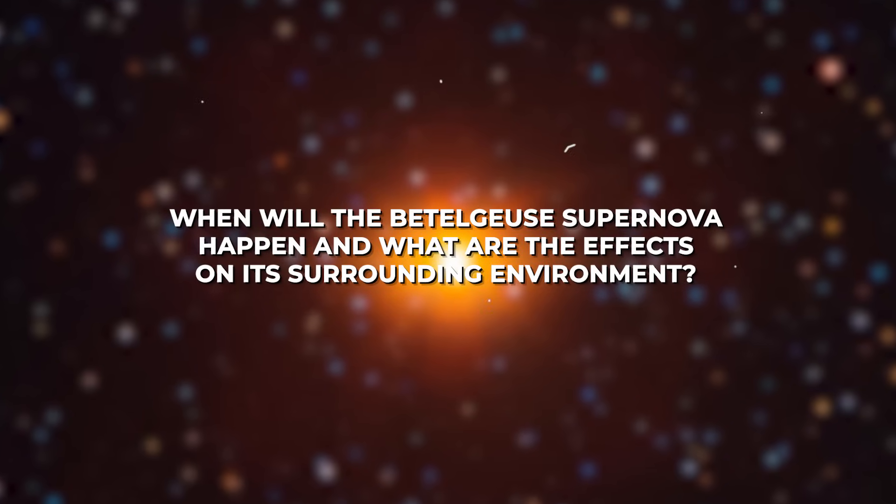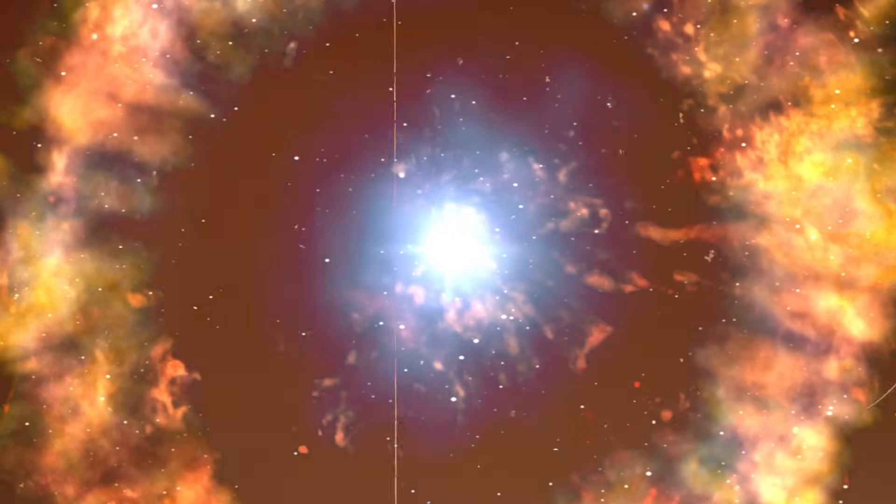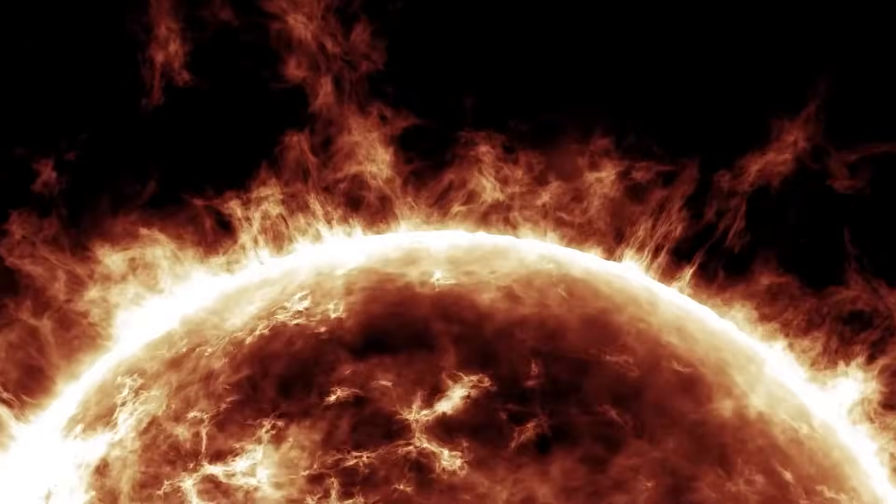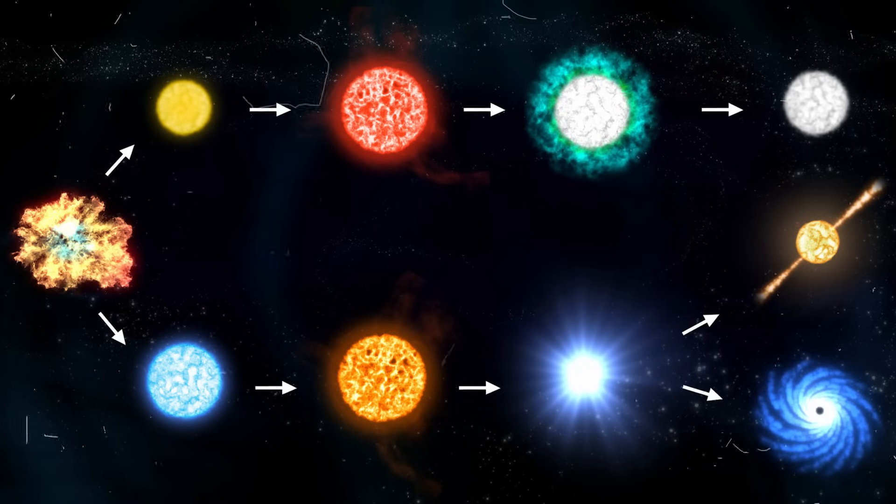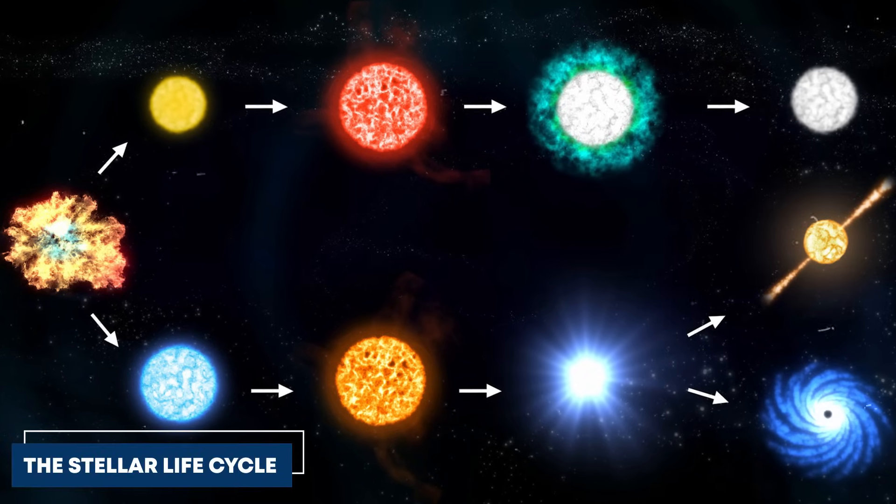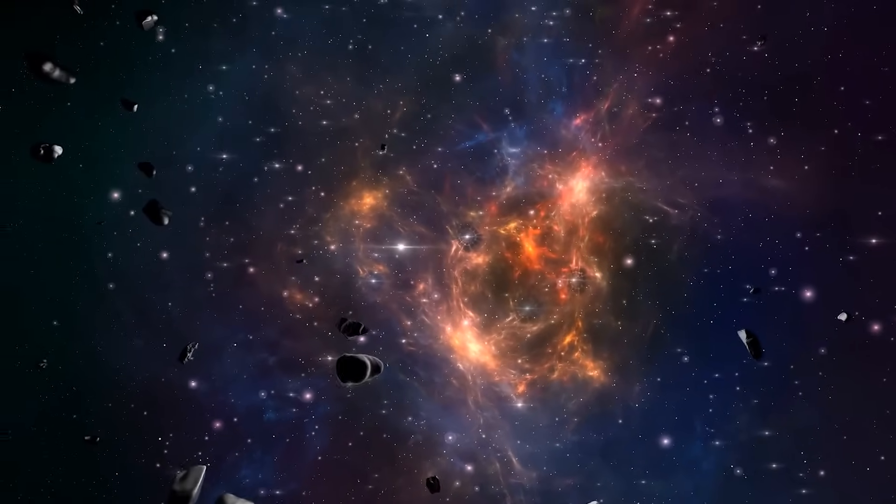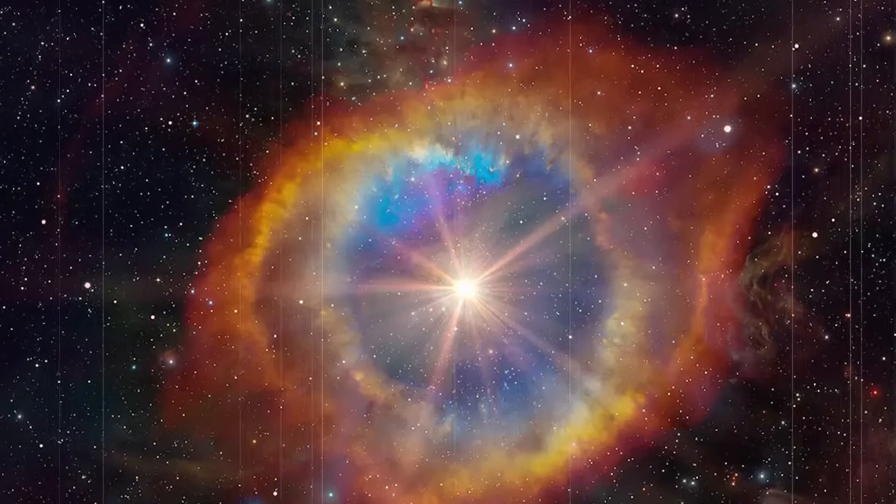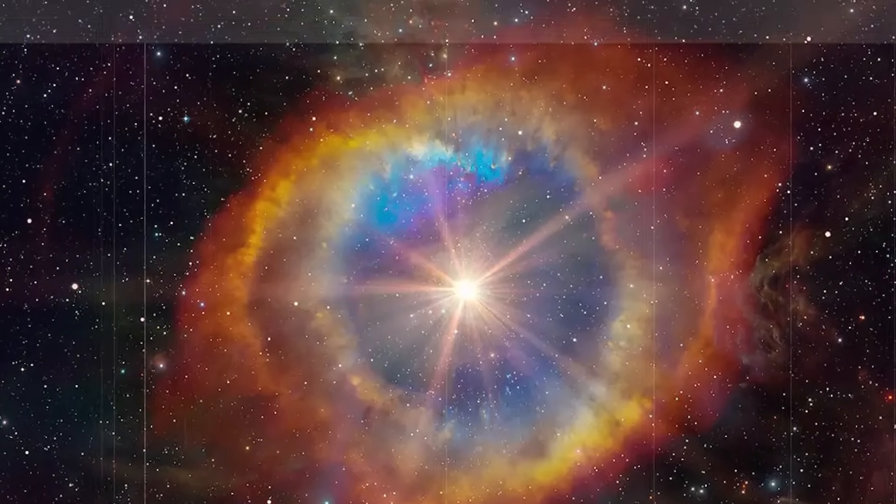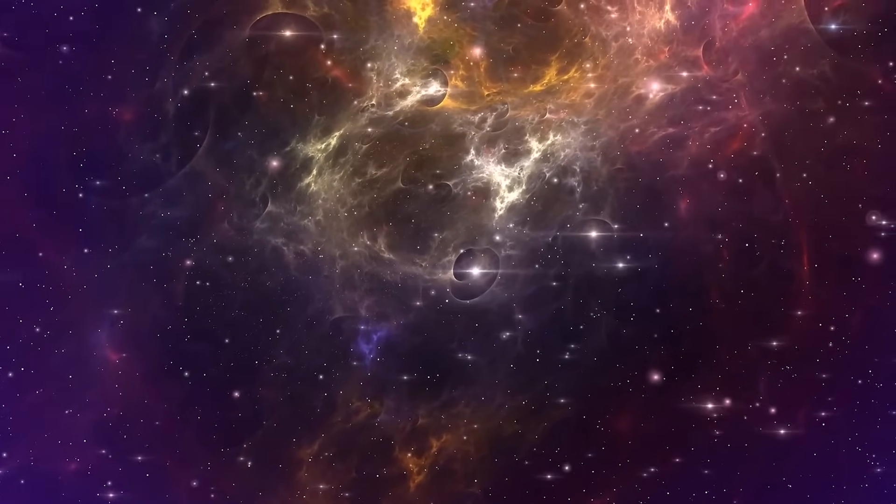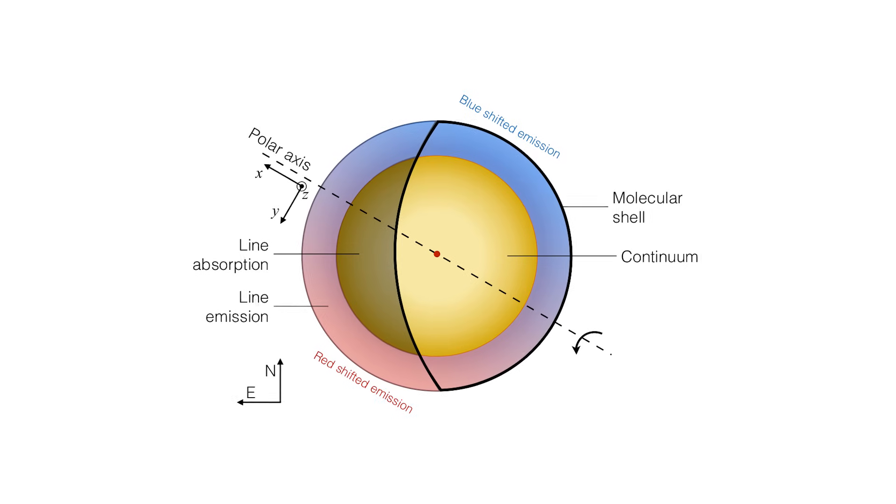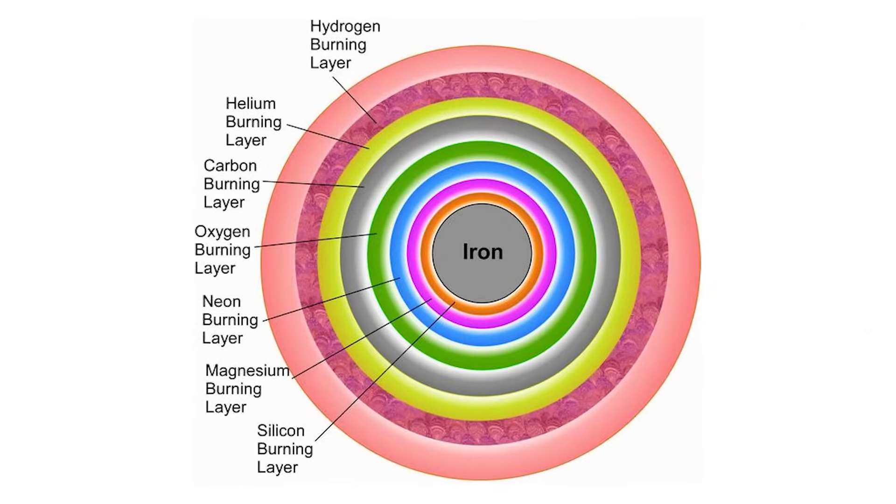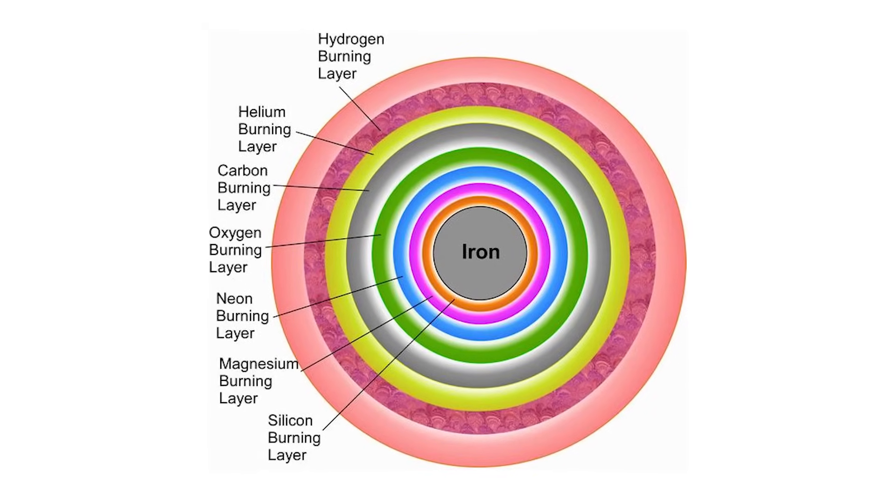When will the Betelgeuse supernova happen, and what are the effects on its surrounding environment? The exact moment a star goes supernova is a challenge to predict. However, the sudden dimming of the red giant has sparked speculation about the fate of Betelgeuse. Some experts believe that the end of this stellar giant may be closer than we think. One of the main reasons for this belief is Betelgeuse's age and its stage in the stellar life cycle. As mentioned earlier, massive stars like Betelgeuse burn through their nuclear fuel at an accelerated rate. Betelgeuse has already depleted the hydrogen in its core and has now moved on to burning heavier elements. Each phase of fusion that follows produces less energy and lasts for a shorter duration. As the star continues to fuse heavier elements, it forms an onion-like structure with different layers burning different elements. However, once a massive star begins fusing iron in its core, it becomes a ticking time bomb.